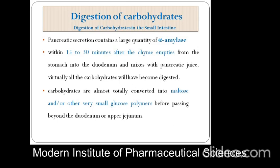Pancreatic secretions contain a large quantity of alpha-amylase. In the small intestine, they contain the alpha-amylase enzymes. Within 15 to 30 minutes after the chyme empties from the stomach into the duodenum — which is a part of the small intestine — and is mixed with pancreatic juice, virtually all the carbohydrates will have become digested. Carbohydrates are almost totally converted into maltose and other very small glucose polymers, such as glucose, fructose, and lactose, before passing beyond the duodenum or upper jejunum.